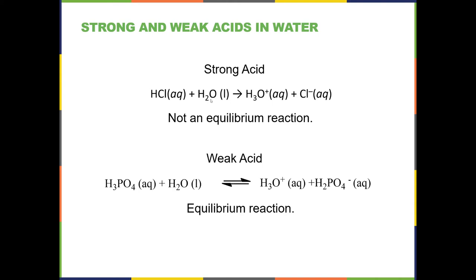Also notice that water was neutral and now has a positive charge — it received both an H and a positive charge. What's left is Cl⁻. An important thing about a strong acid: this is not an equilibrium reaction; it goes to completion. So if HCl is 1 molar in solution, the concentration of H₃O⁺ is also 1 molar, because all HCl reacts with water to form H₃O⁺ and Cl⁻. There is always plenty of water present — even in a 1 M solution, there's about 50-something molar water — so this reaction always goes to completion.